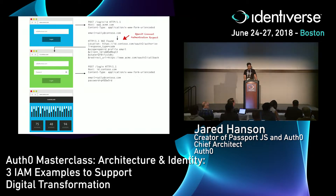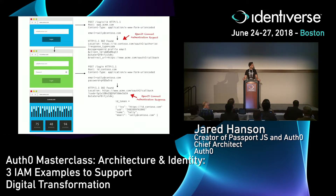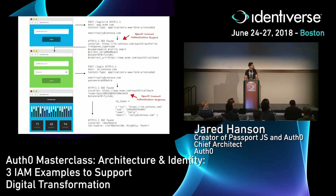If everything checks out, Contoso redirects Sally back to the application she wanted to access, and the application can now identify that Sally has logged in. In OpenID Connect, this happens via what's known as an ID token. Acme.com is relying on Contoso — Sally's employer — to authenticate Sally, and Contoso conveys that Sally has successfully authenticated along with her information. The key bits of digital identity are the issuer field, which is contoso.com, and the subject, which is Sally's identifier.